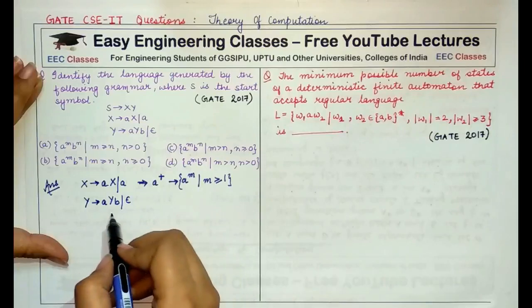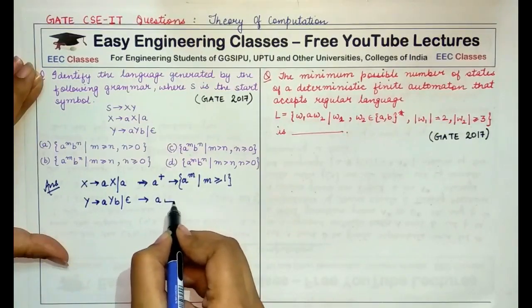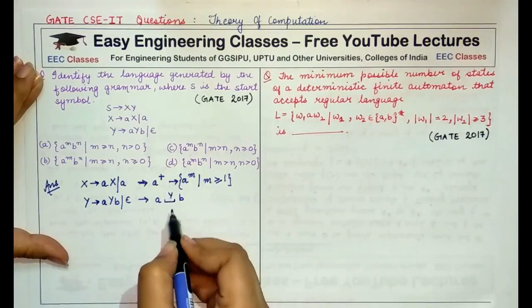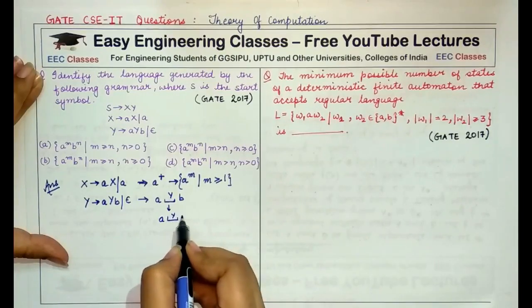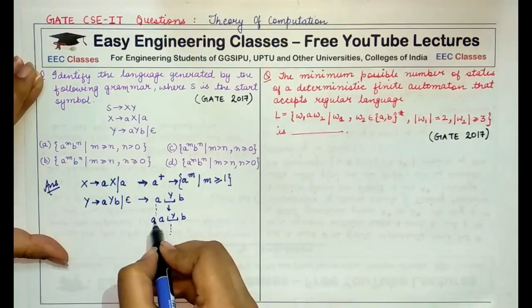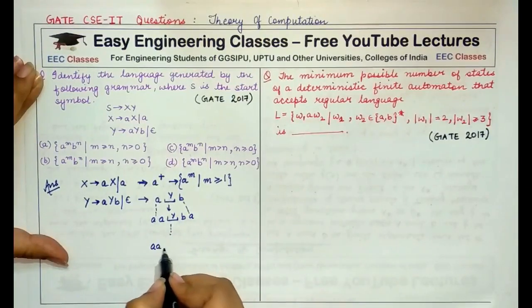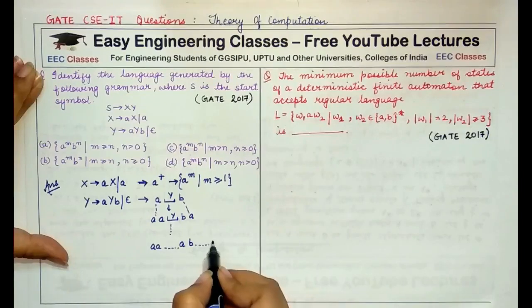In this case, Y would always be replaced by A, Y and B. And this Y would again be replaced by A, Y and B and so on. If you see here, the string that would be formed by Y would be some number of A's and then followed by the equal number of B's.